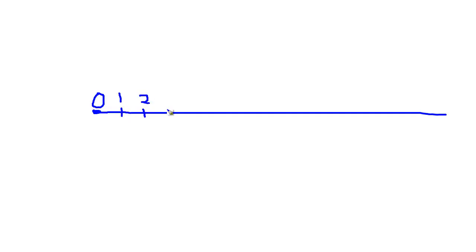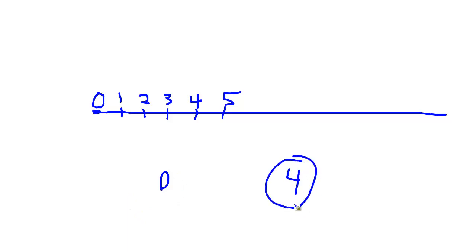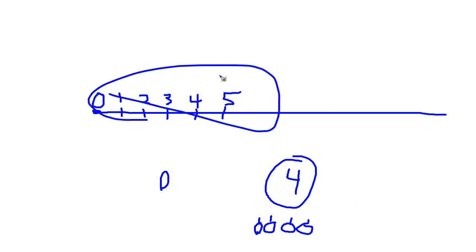Let's talk binary numbers. In school your teachers probably drew a number line with zero, one, two, three, and so on. Growing up watching Sesame Street you learn that four means having four apples. We're used to this numbering system because it's what we're raised with — it's called base ten, probably because we have ten fingers or ten toes.